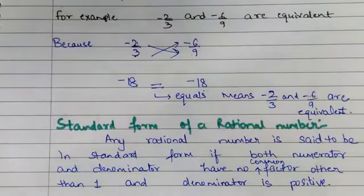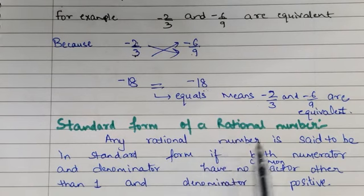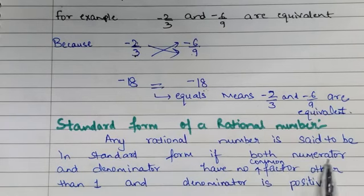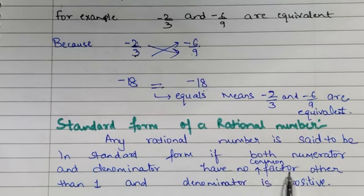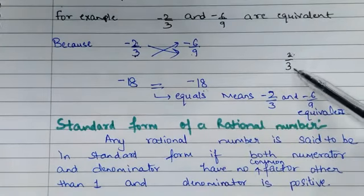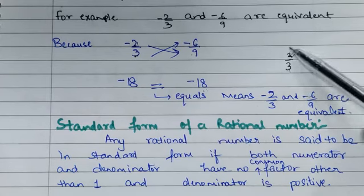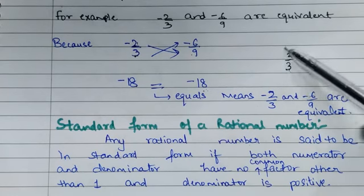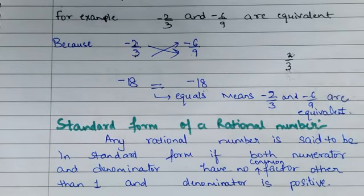Now, what is the standard form of a rational number? Any rational number is said to be in standard form if both numerator and denominator have no common factor other than 1. For example, we have 2 by 3 — there is no common factor other than 1, so this rational number is in standard form.